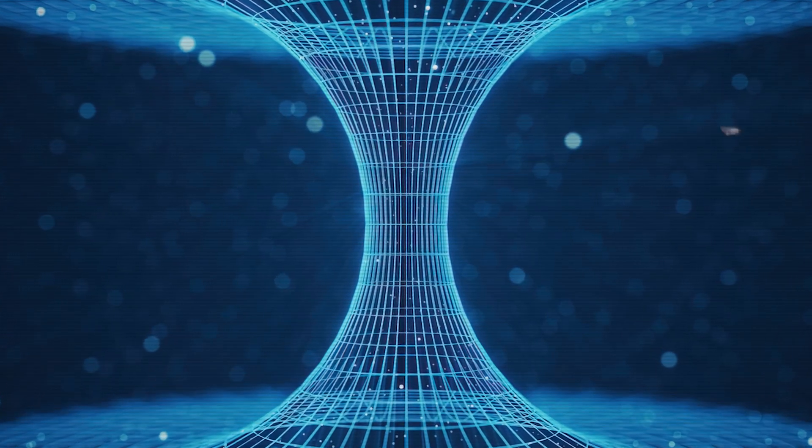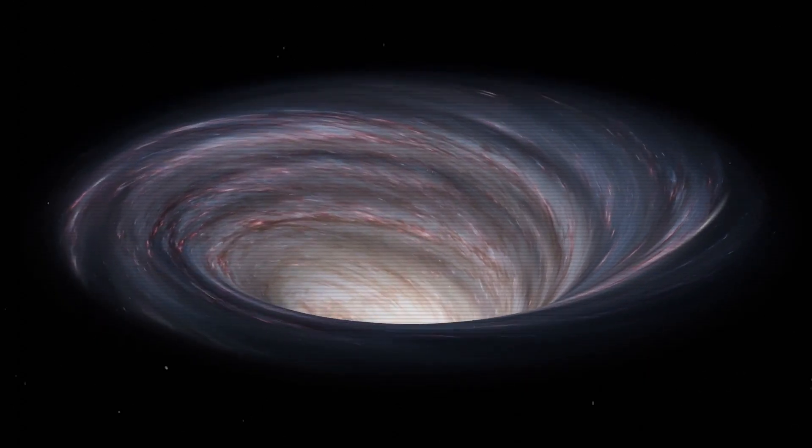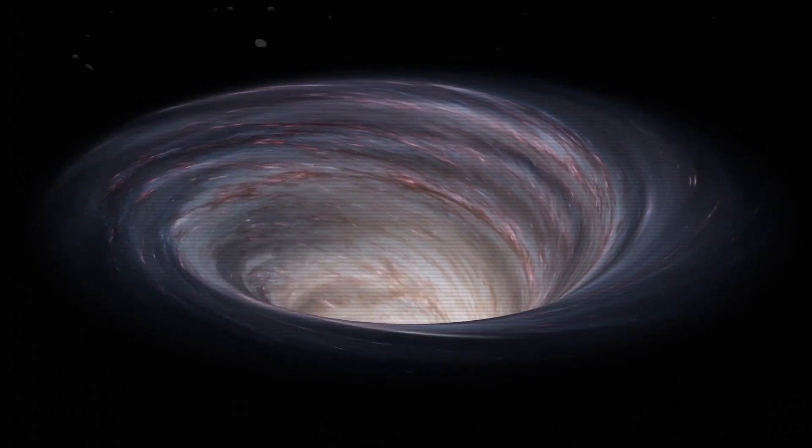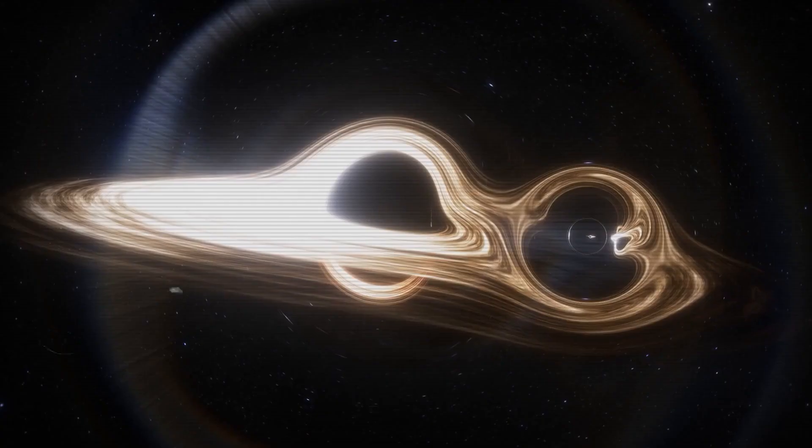Wormholes were first theorized in 1916, though that wasn't what they were called at the time. While reviewing another physicist's solution to the equations in Albert Einstein's theory of general relativity, Austrian physicist Ludwig Flamm realized another solution was possible.